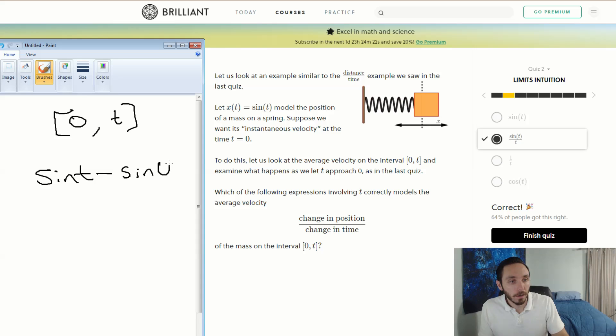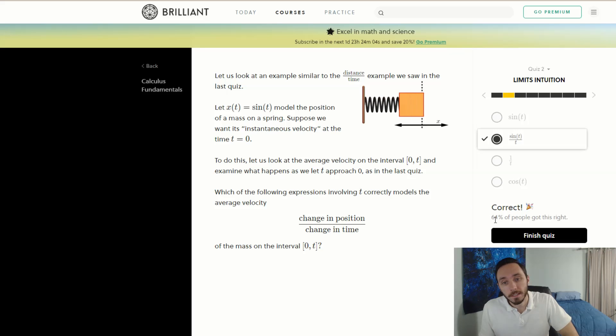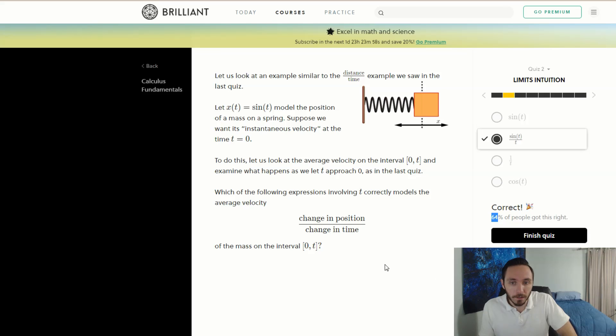So we're finding sine of t minus sine of zero, and this is all over the change in t values, t minus zero. We know that sine of zero nulls out, we know that zero turns out to be equal to zero, and look at that, you get sine of t over t as a final answer. Says 64 percent of people got this right. Hmm, okay, that's a little lower than I'd expect.